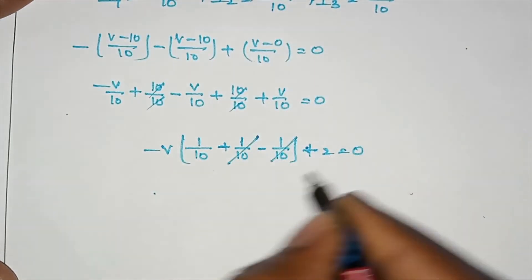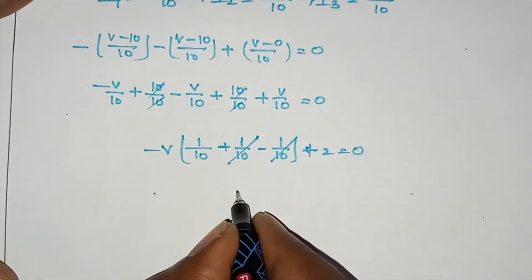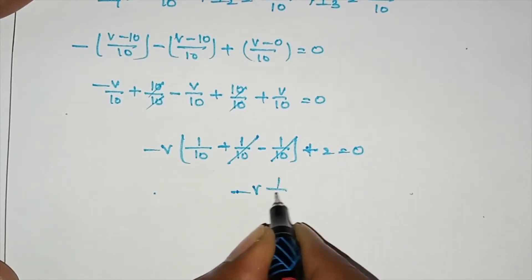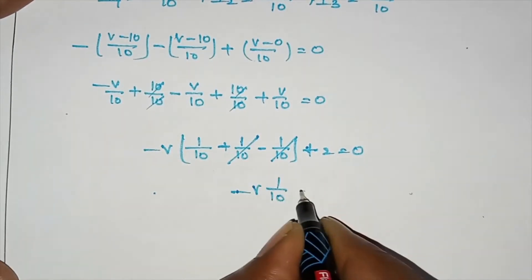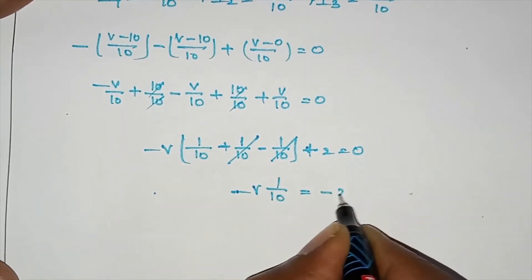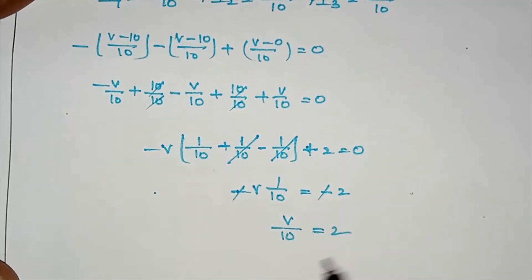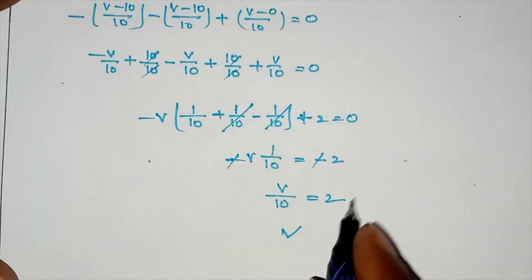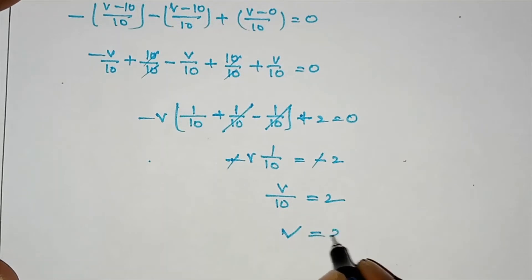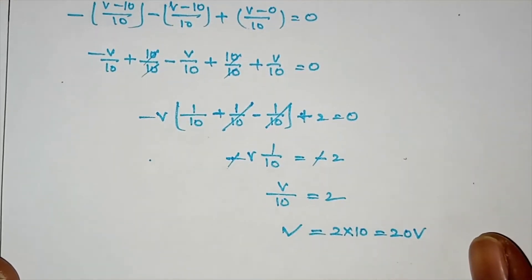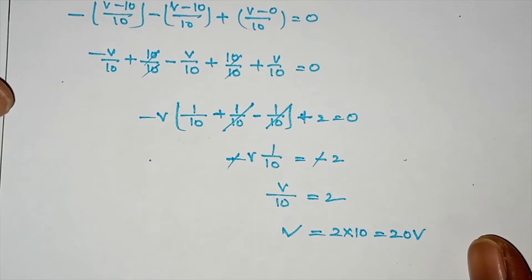1 by 10 plus 1 by 10 plus 1 by 10 — that is equal to 20 volts.